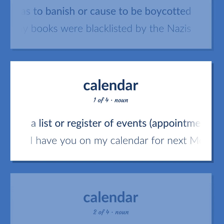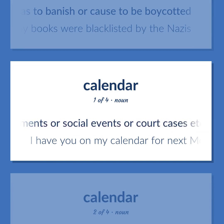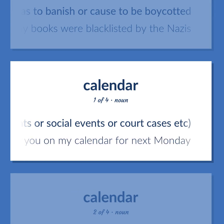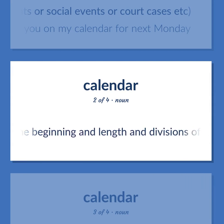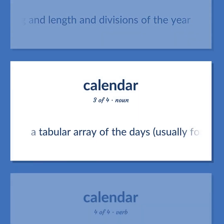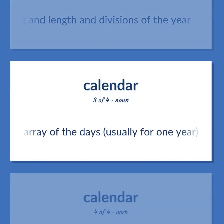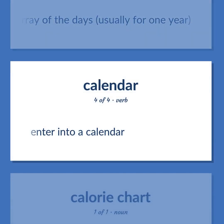Calendar: A list or register of events, appointments, social events, or court cases — 'I have you on my calendar for next Monday.' A system of timekeeping that defines the beginning and length and divisions of the year. A tabular array of the days, usually for one year. Enter into a calendar.